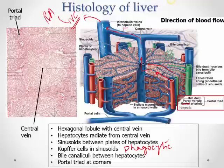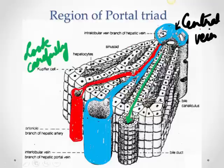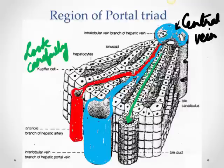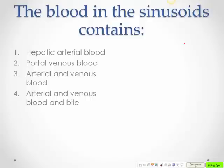In a close-up view of the portal triad: the central vein receives sinusoidal blood, hepatocytes lie in plates beside sinusoids, bile canaliculi collect bile from hepatocytes into bile ductules. Portal vein branches pour nutrient-rich but deoxygenated blood into sinusoids, hepatic artery branches provide oxygenated blood, and after exchange both streams flow toward the central vein and out through hepatic veins.